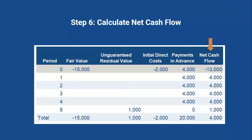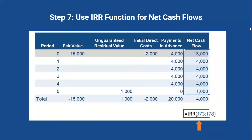Next, we calculate the net cash flow to figure out the internal rate of return on all these inputs. Sum the values for each column: in period zero, fair value plus initial direct costs plus the first payment nets to negative $13,000. Then periods one through four each have a positive cash flow of $4,000, and period five shows a positive cash flow of $1,000. In Excel, you type equals IRR on those net cash flow cells to calculate the implicit interest rate.